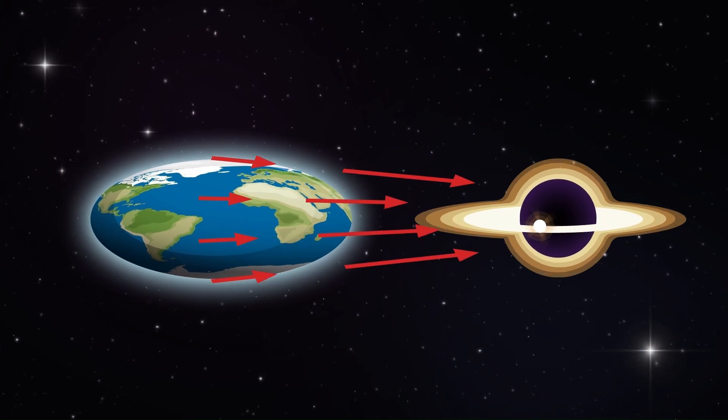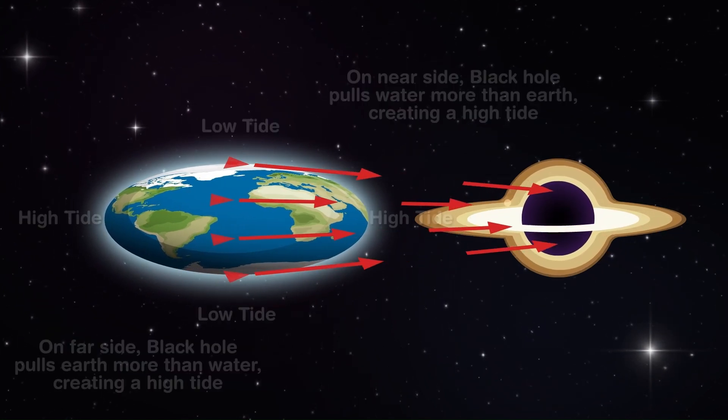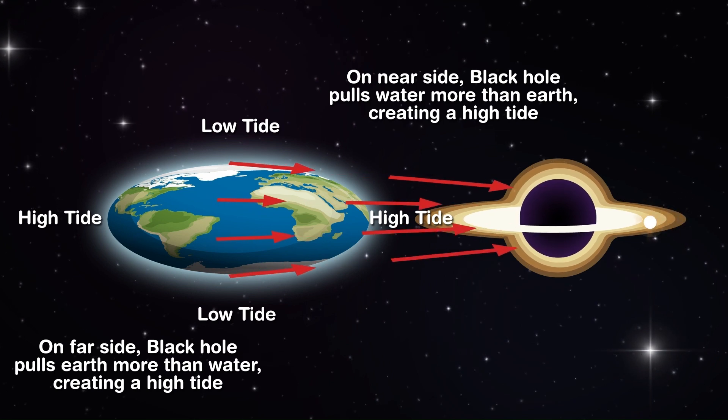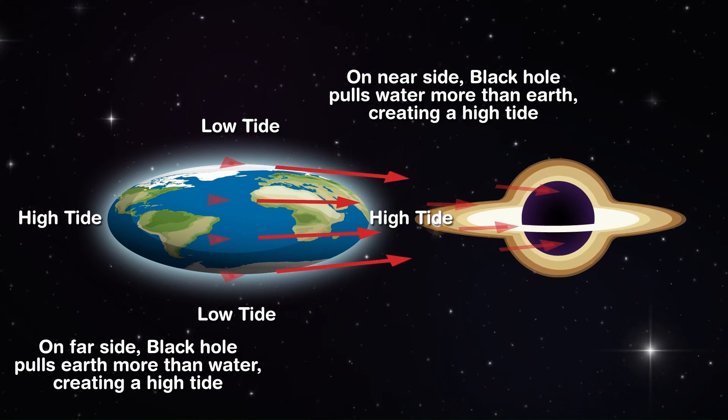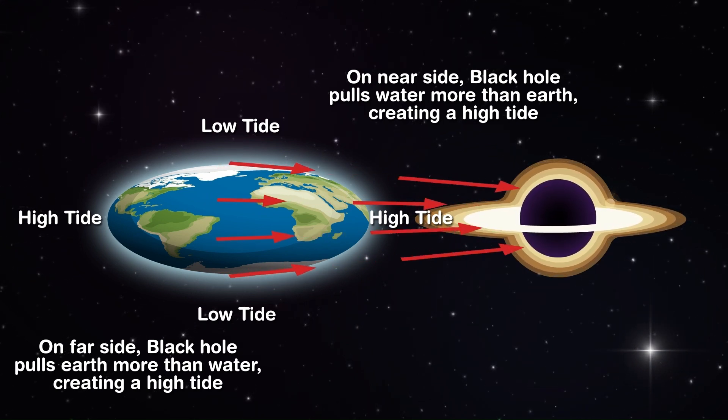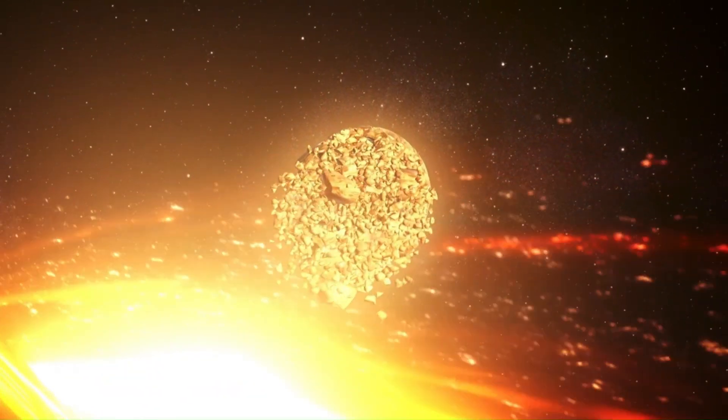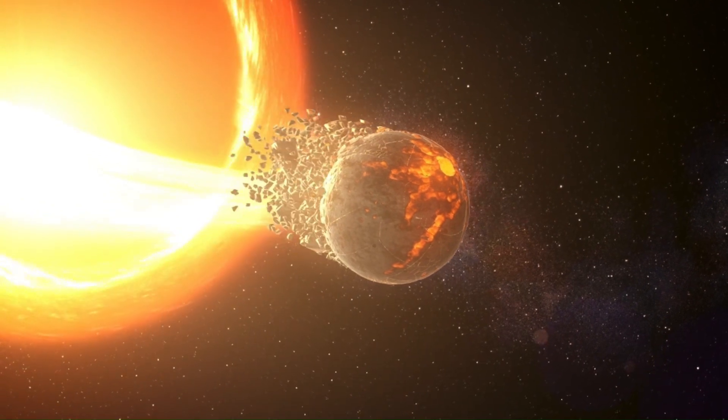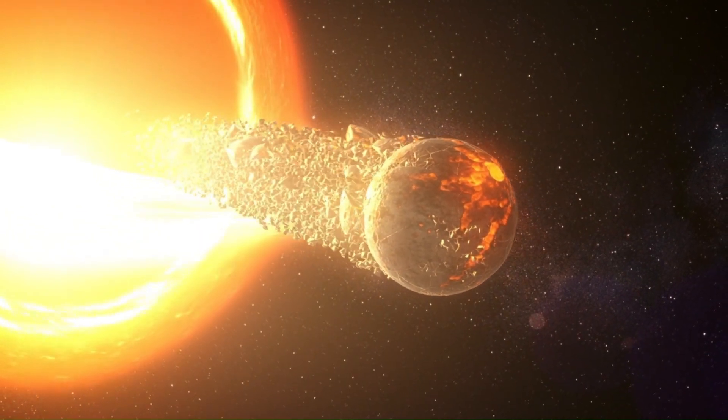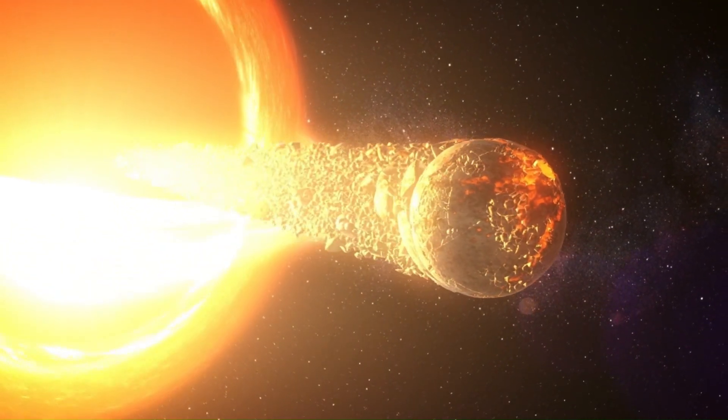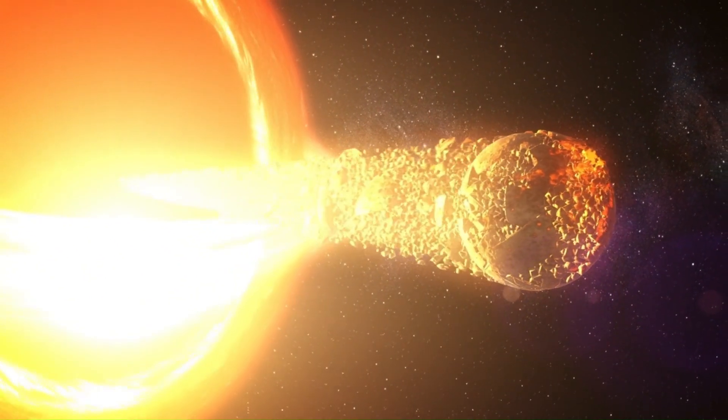The difference in gravity between the side of Earth closest to the black hole and the side farther away would become significant, a phenomenon known as tidal forces. These forces would stretch Earth into what's known as spaghettification. Our planet, once a sphere, would be stretched into a long, thin spaghetti-like shape and eventually ripped apart atom by atom.